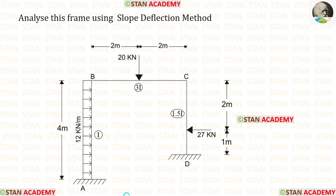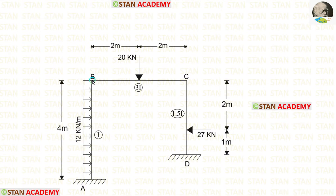Hello everyone. Today we are going to analyze this frame using the slope deflection method. Before analyzing, let us see the frame one time. In this frame there are two columns, column AB and column CD. Also there is a beam BC.